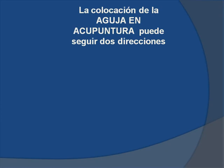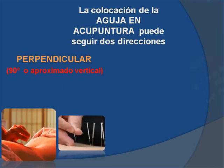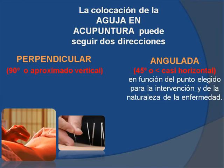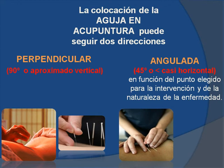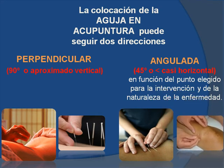En acupuntura solamente podemos colocar la aguja en dos direcciones. La primera, perpendicular, 90 grados o aproximado a la vertical. Y la segunda, una aguja angulada, 45 grados o menos, casi horizontal, en función del punto elegido para la intervención y de la naturaleza de la enfermedad.